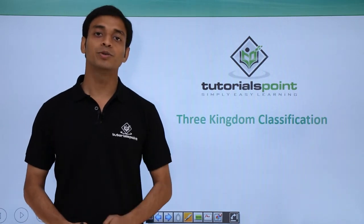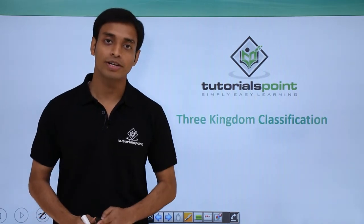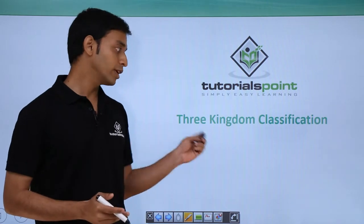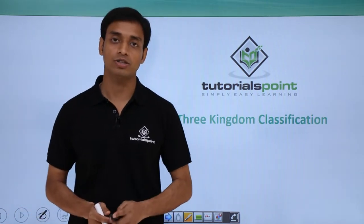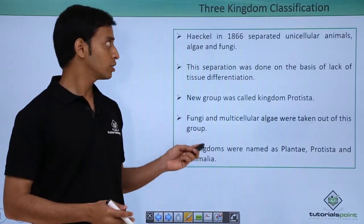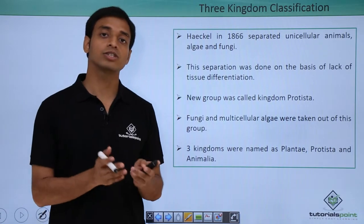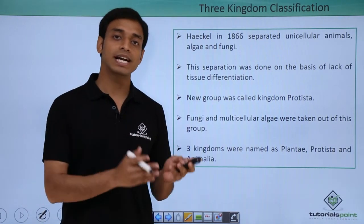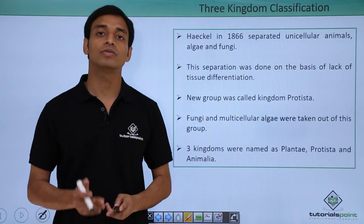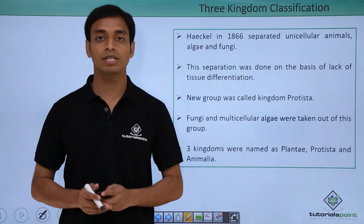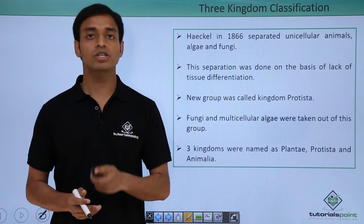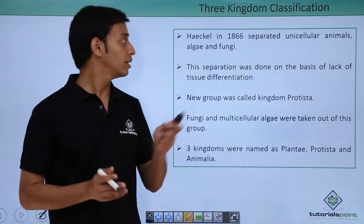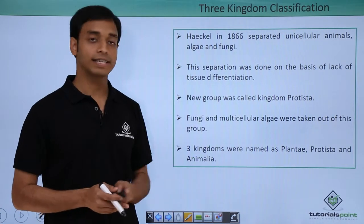Hello everyone, welcome to Tutorials Point. In this video we are going to talk about the three kingdom system of classification. This three kingdom system was put forward in order to overcome the disadvantages or the limitations of the two kingdom system of classification. It was put forward by scientist Haeckel in the year 1866.